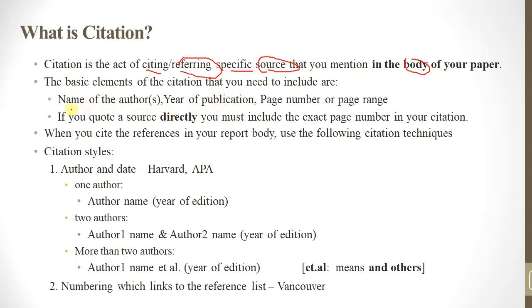The basic elements of citation include: name of the authors, year of publication, and page number or page range.